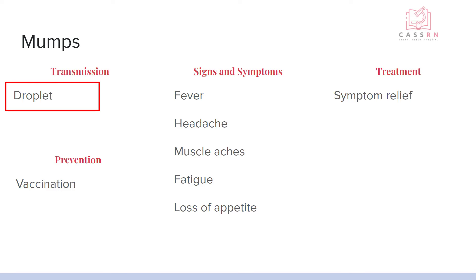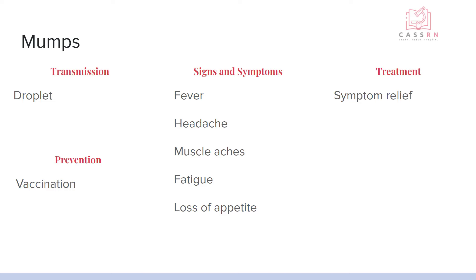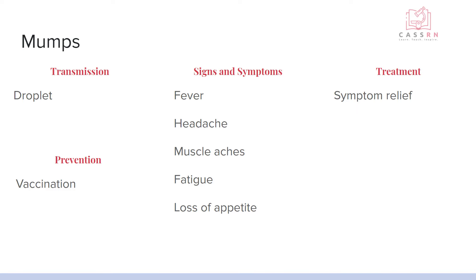Mumps is transmitted via droplet transmission, and there's also a vaccine for this one. Symptoms are very similar to meningitis — fever, headaches, muscle aches, fatigue, and loss of appetite. Mumps is viral, so there is no antibiotic treatment; we just look at symptom relief.